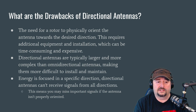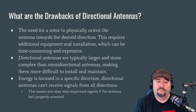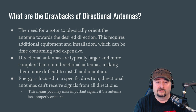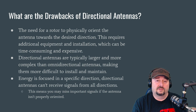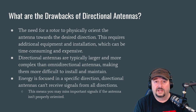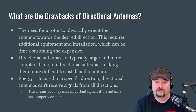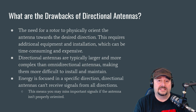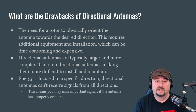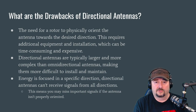Because energy is focused in a specific direction, directional antennas can't receive signals from all directions. This means you could miss an important signal or transmission because your antenna is pointing the other way, so you need to be more aware. Many folks partner a different type of antenna with their directional antenna so they don't miss out on signals and know where to point the directional antenna.